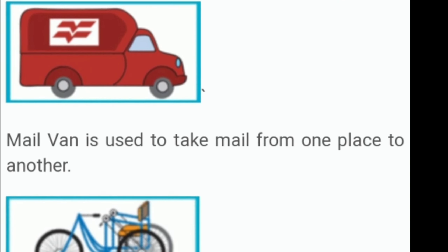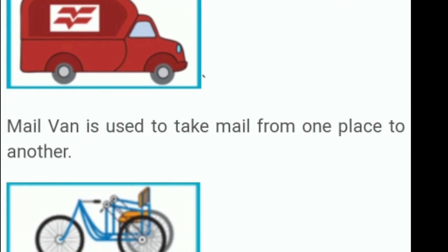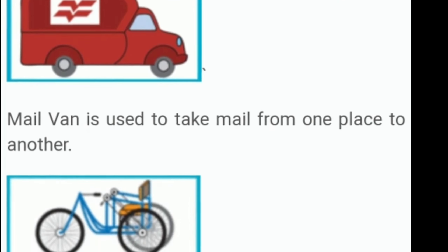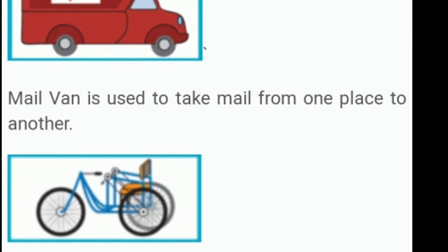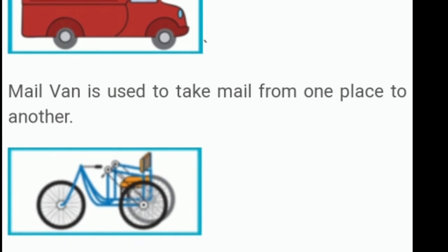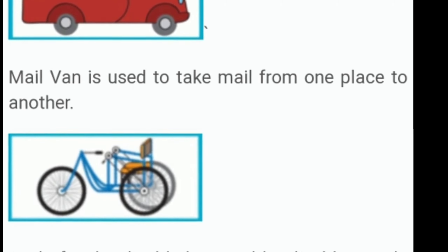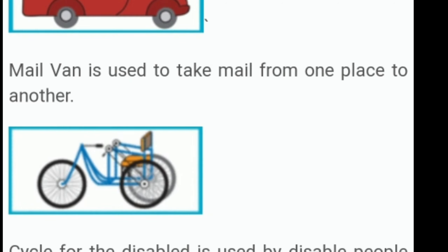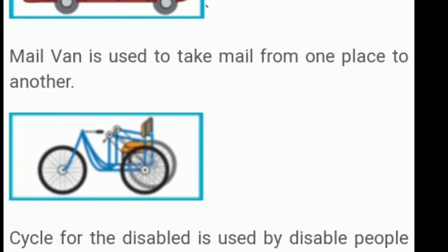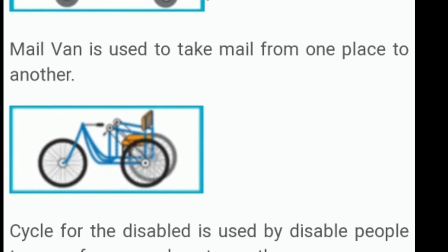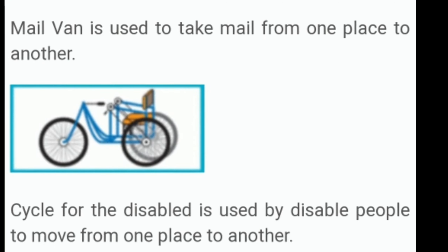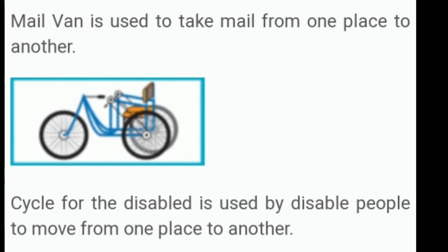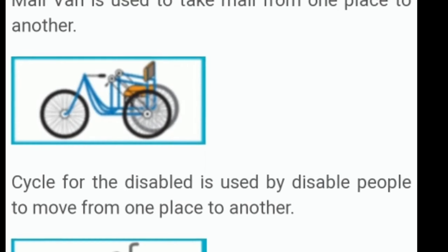Next picture: Mail van is used to take mail from one place to another. Next picture is of a cycle for the disabled person. This cycle is used by disabled people to move from one place to another.